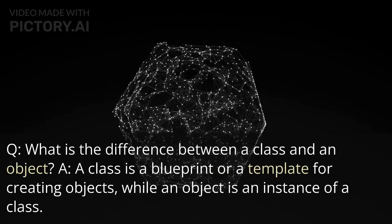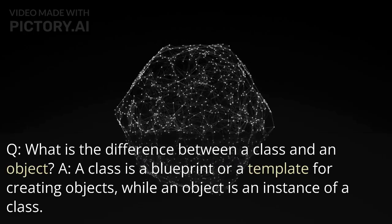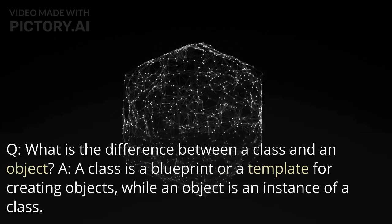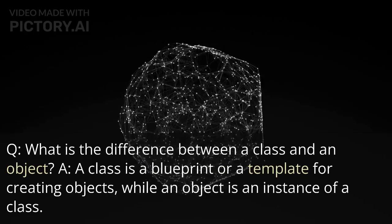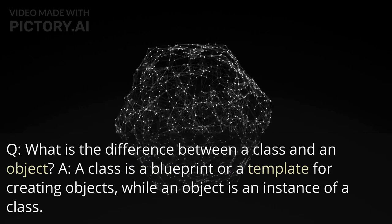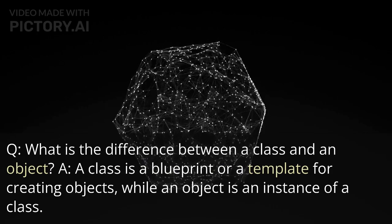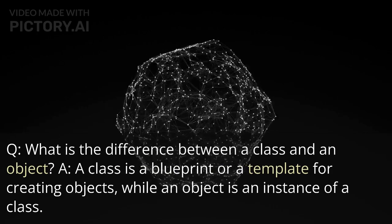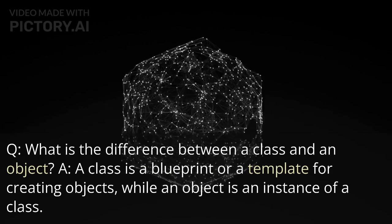What is the difference between a class and an object? A class is a blueprint or a template for creating objects, while an object is an instance of a class.